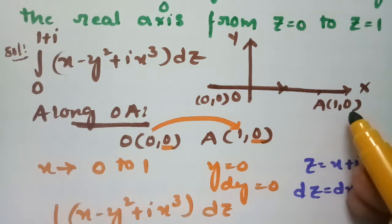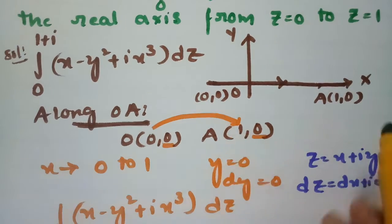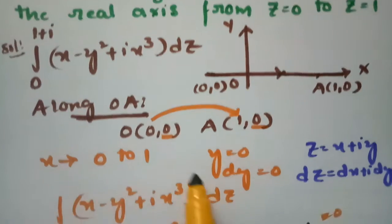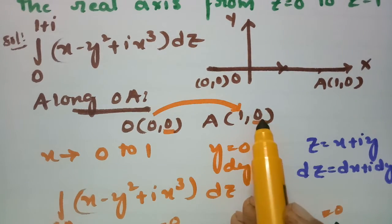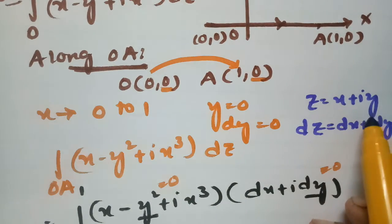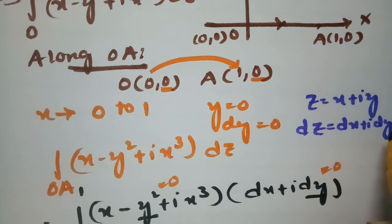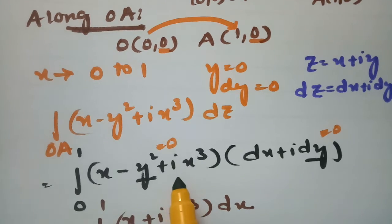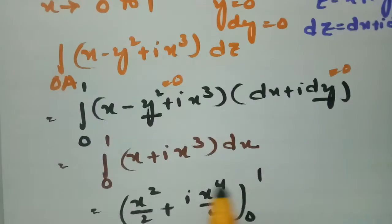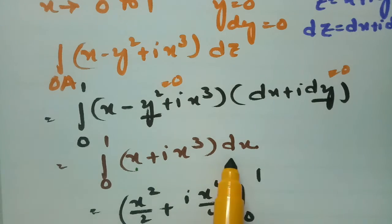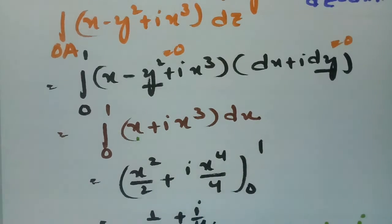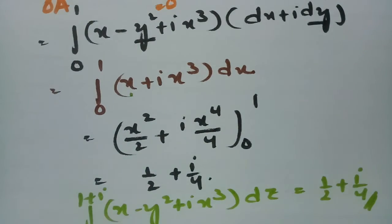O is the origin and A is (1, 0) along the real axis. Since y = 0 is constant, dy = 0 and x varies from 0 to 1. With z = x + iy, dz = dx + i·dy. Substituting y = 0 and dy = 0, the integral becomes the integral of (x + i·x³) dx, giving x²/2 + i·x⁴/4 from 0 to 1, which equals 1/2 + i/4.